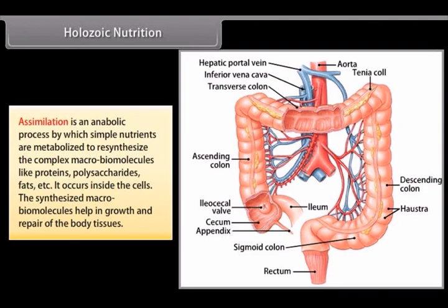Assimilation is an anabolic process by which simple nutrients are metabolized to resynthesize complex macro-biomolecules like proteins, polysaccharides, fats, etc. It occurs inside the cells. The synthesized macro-biomolecules help in growth and repair of the body tissues.